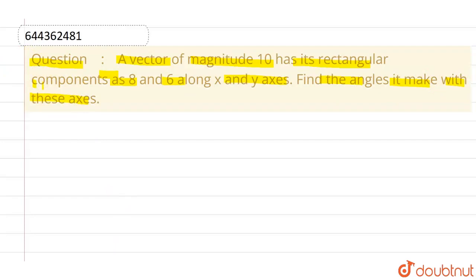So let us suppose that the vector components along the x-axis is 8 units and along the y-axis is 6 units, and the vector itself is of 10 units. Let us say this is the vector. The angle made with the x-axis is theta, and the angle made with the y-axis is obviously 90 minus theta.